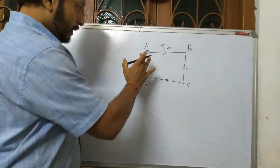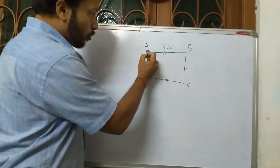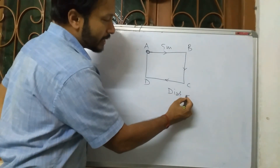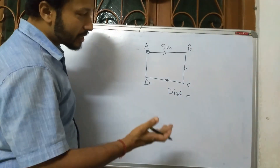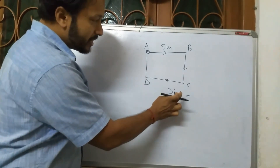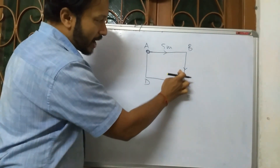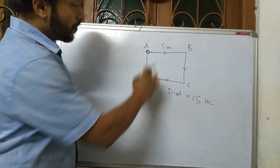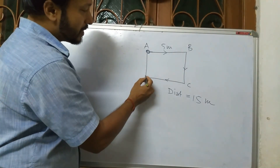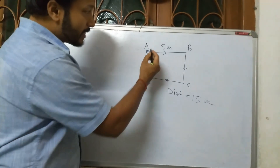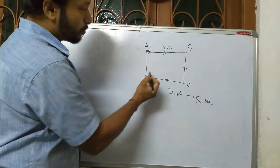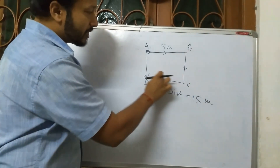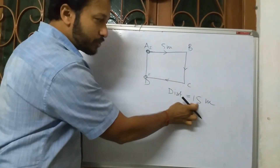The person was at A. The actual path he has covered — that is the distance he has covered. Distance is 5 plus 5 plus 5, that is 15 meters he has covered. This is his initial position and this is his final position — 5, 5, 5, that is 15 meters.